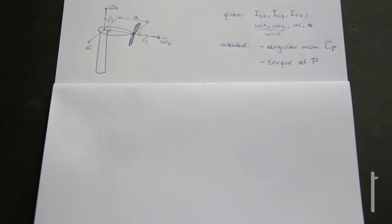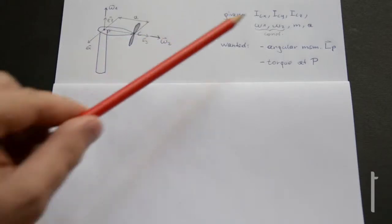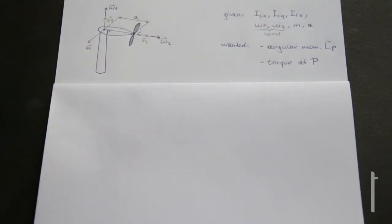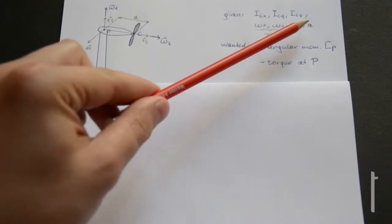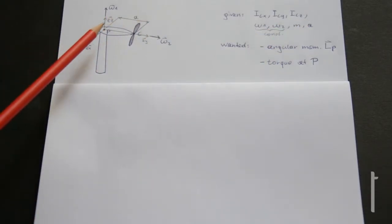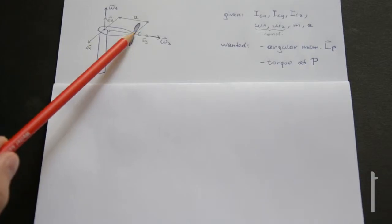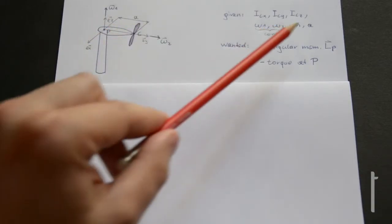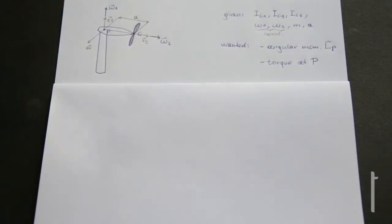Both angular velocities omega 1 and omega 2 are constant — meaning they have no acceleration and keep rotating at the same velocity. We also know the mass and the length a, which is the distance between point P and point C.